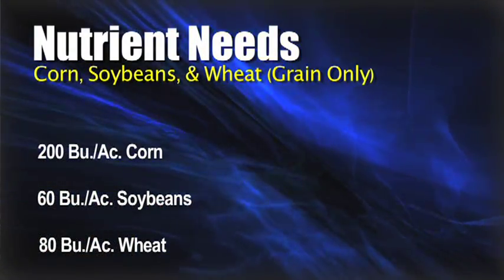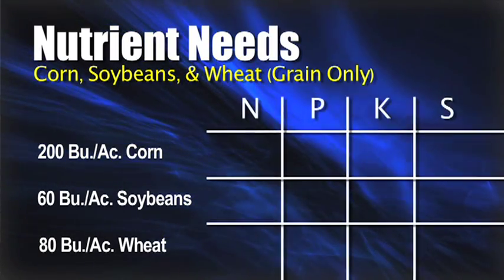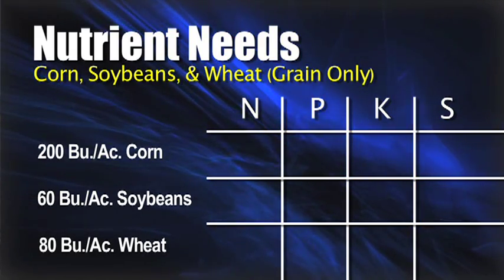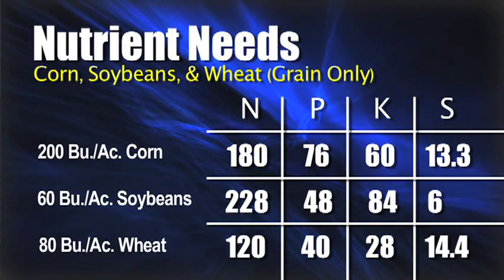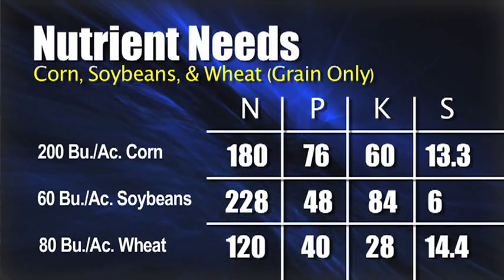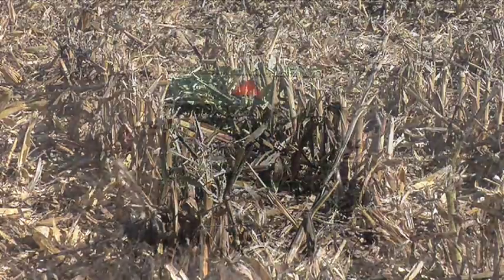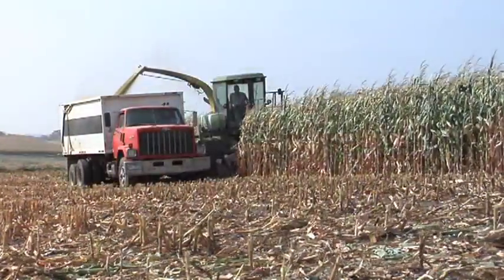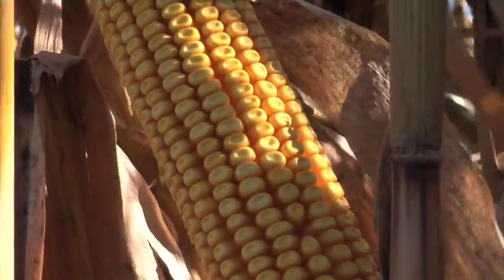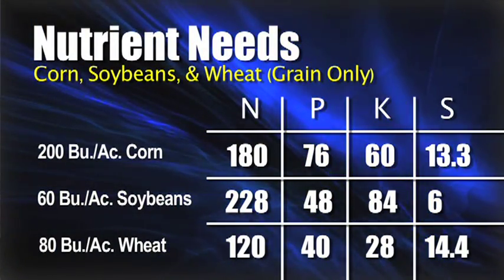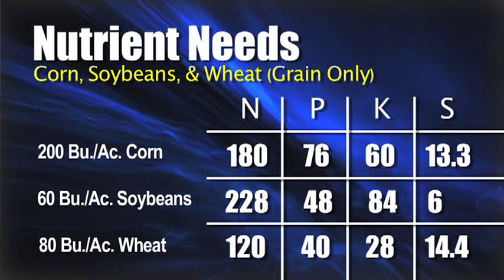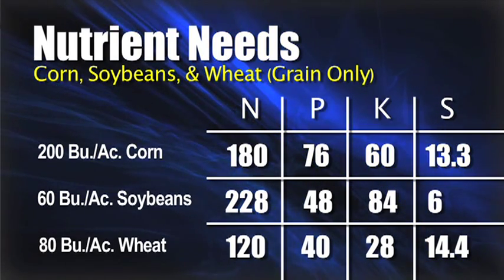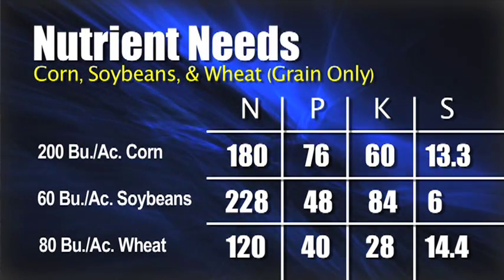Here's what we always like to look at when making fertility decisions on our farm: what are the crop nutrient needs for that particular crop and our yield goal? What we're going to put up on the screen is 200 bushel corn, 60 bushel soybeans, and 80 bushel wheat, and what we need for the major nutrients — nitrogen, phosphorus, potassium, and sulfur. These are actual nutrients being taken out of the ground just for the grain. If you're getting 200 bushel corn and 60 bushel beans in a two-year rotation, you need roughly 150 pounds of actual P and about 150 pounds of actual K in a two-year cycle — that's a lot of plant nutrients.